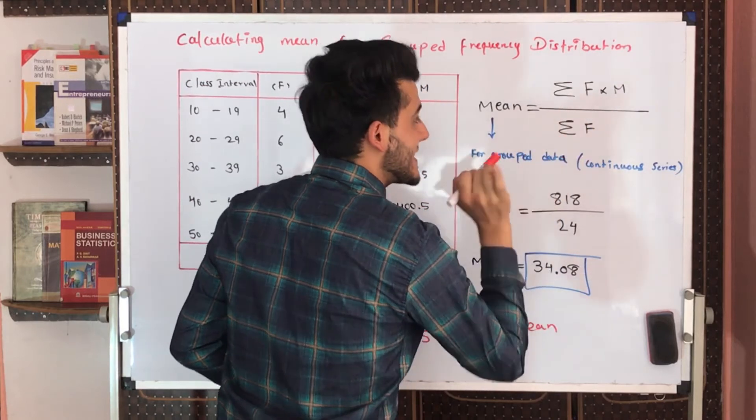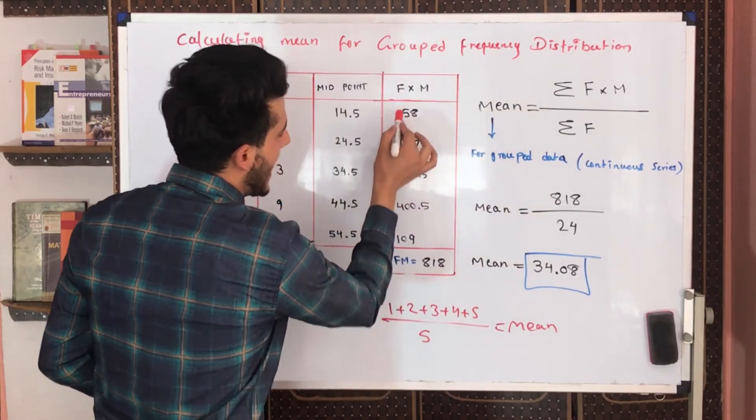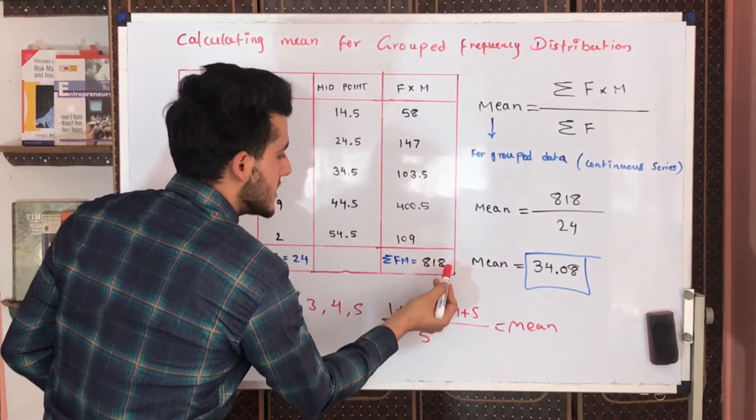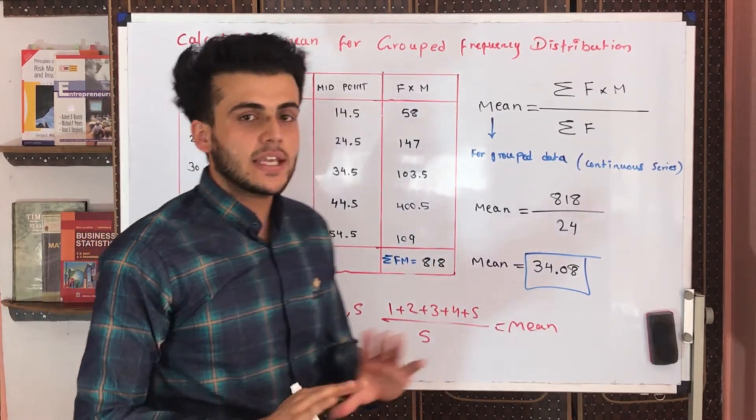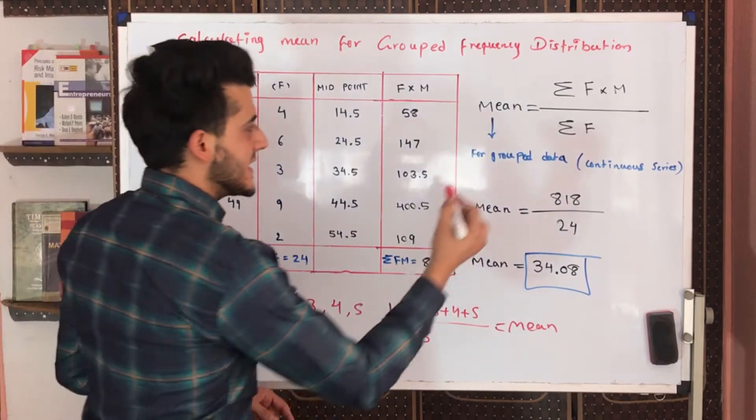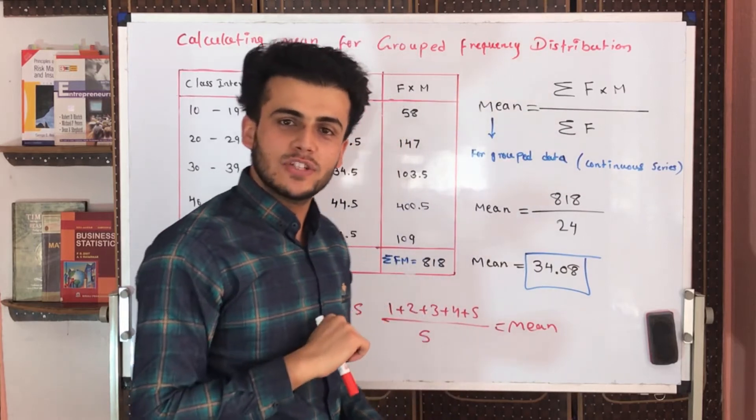After multiplying them, we are getting these values. And in here it is considering summation of all these values. So for summation of that, we have to add all of them to each other and the result is 818. Now we have summation of frequency is 24, so everything according to formula is correct.